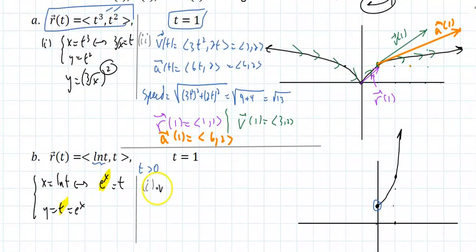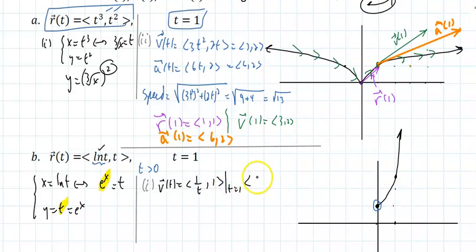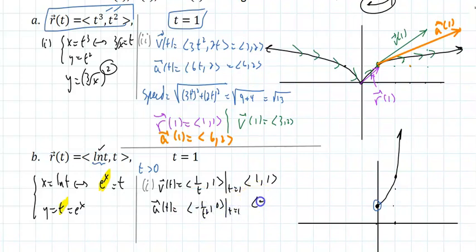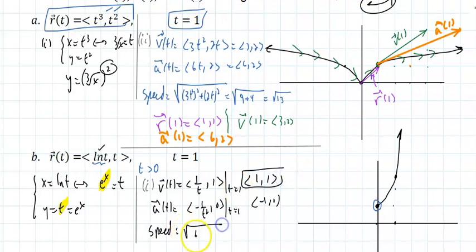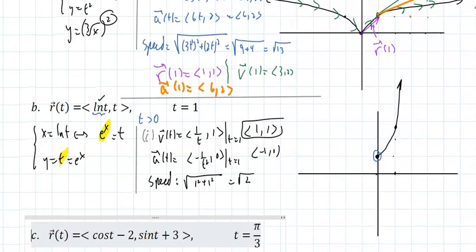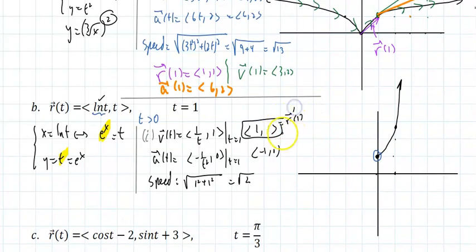The velocity v(t) is just the derivative of the position: (1/t, 1), evaluated at t=1 gives (1, 1). The acceleration is (-1/t², 0), evaluated at t=1 gives (-1, 0). The speed, evaluated at that point, is the square root of 1² + 1² = √2. That gives me everything I need — I have my vectors.